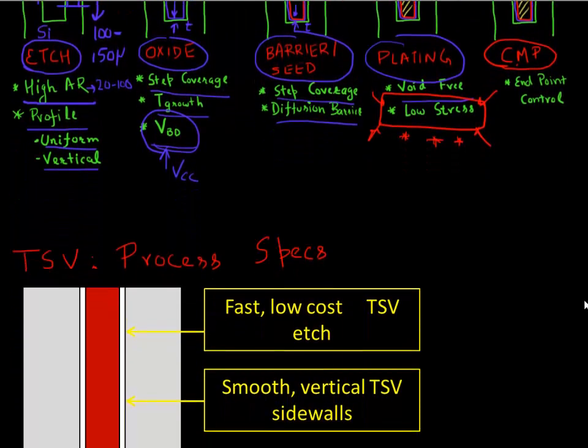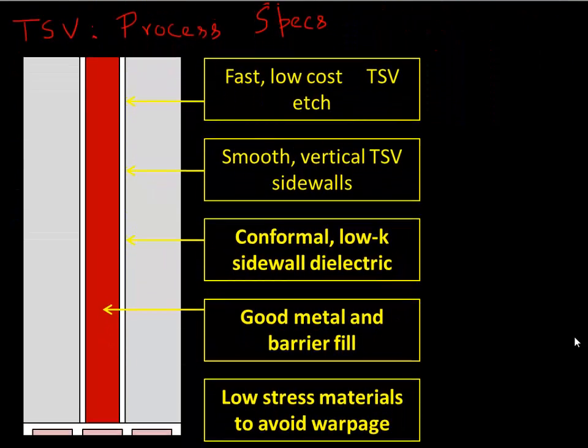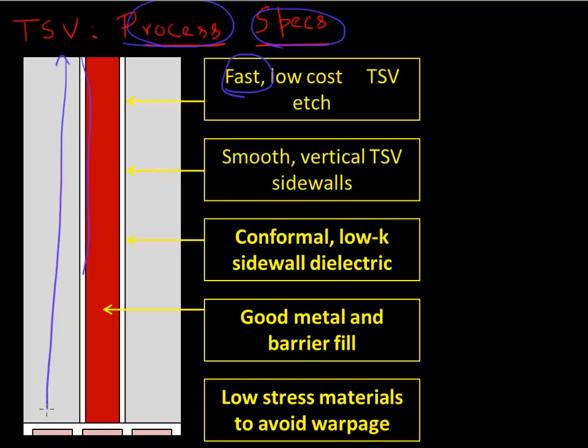So to summarize, these are the different specifications for the different process steps. You want a good etch profile. You want it to happen fast. Remember that we are etching through a very large depth. We are etching 200, 250 micron deep of silicon. So we don't want the wafer to wait all day for this etch to happen. So we want a fast etch. At the same time, we want it to be low cost.